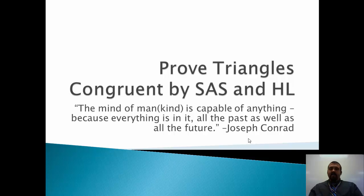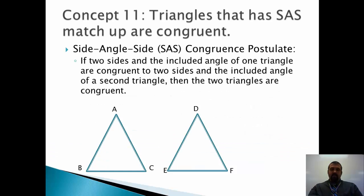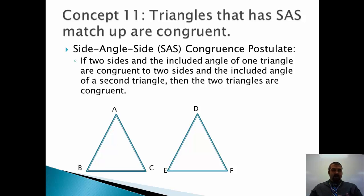The angle could be between the two sides, or it could be not between the two sides. Based on the title of this section — Prove Triangle Congruent by Side, Angle, Side and Hypotenuse Leg — I don't see anything that says Side, Side, Angle, so that one probably doesn't work. Triangles that have Side, Angle, Side matchup are congruent. The SAS congruence says: if two sides and the included angle of one triangle are congruent to two sides and the included angle of the second triangle, then the two triangles are congruent.